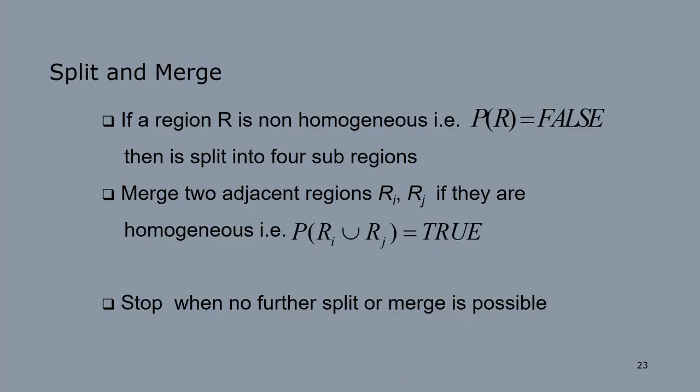The split and merge algorithm works as follows: if a region R is not homogeneous — that is, the predicate of R is false — split it into four sub-regions. After splitting, merge two adjacent regions Ri and Rj if they are homogeneous, i.e., the predicate of Ri union Rj equals true. Stop when no further splitting or merging is possible. This procedure is repeated until the final segmented image is obtained.